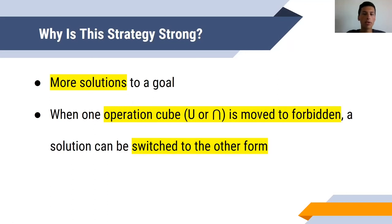So why is this strategy strong? What makes it important? Firstly, it gives you more solutions to a goal. If you had, for example, red intersection blue in parentheses prime, according to De Morgan's law, you could have a second solution by using that law to get red prime union blue prime. So it gives you more flexibility in creating more solutions for you.